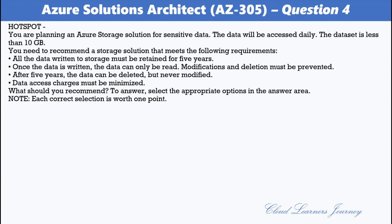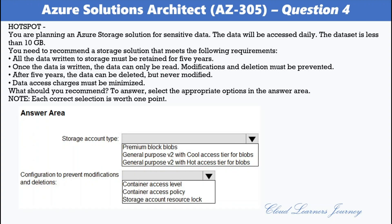Select the appropriate options in the answer area. For storage account type, the options are: premium blobs, general purpose V2 with cool access tier for blobs, and general purpose V2 with hot access tier for blobs. For configuration to prevent modification and deletion, the options are: container access policy and storage account resource log. The correct answers are: general purpose V2 with hot access tier for blobs, and container access policy.